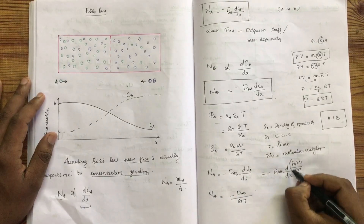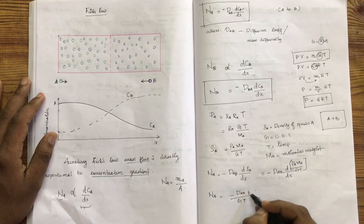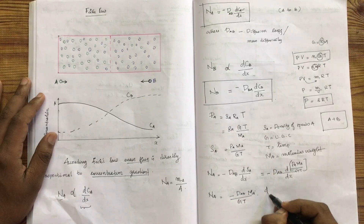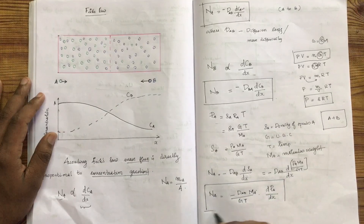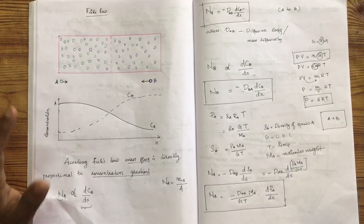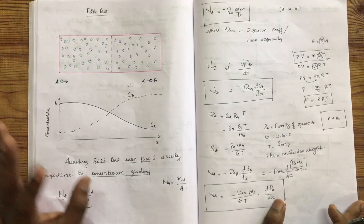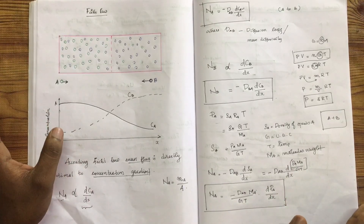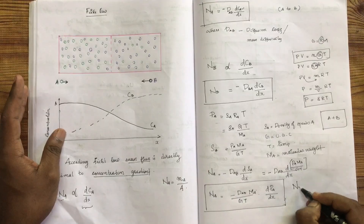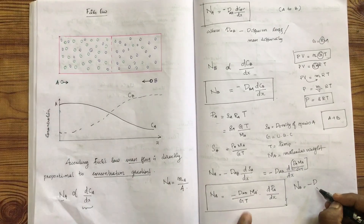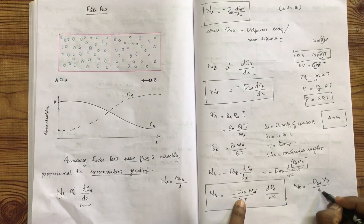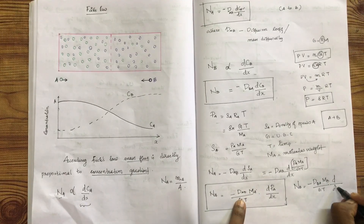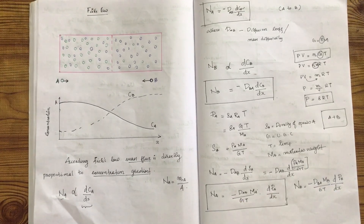Now we multiply by dPA by dx. We fix this and define what we are fixing. We are changing the difference here. Now we will have the number of NB as a species, and the number of NB is for B. Now we have NB and mB by GT, and the partial pressure of B, and we can differentiate it.